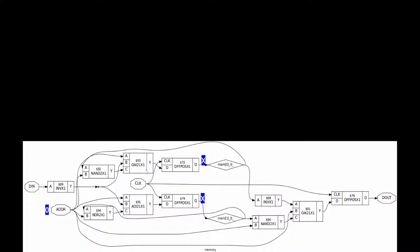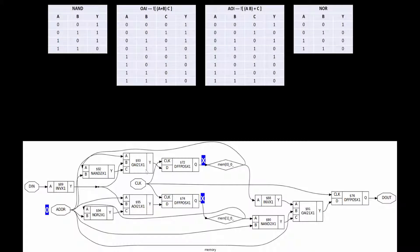We'll keep the truth table ready for these gates. For the NAND gate: whenever one of the inputs is 0, output is 1; whenever both inputs are 1, output is 0. For the NOR gate: whenever one input is 1, output is 0; whenever both inputs are 0, output is 1. NOR is an inverted OR, and NAND is an inverted AND.